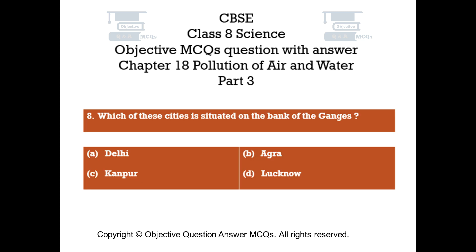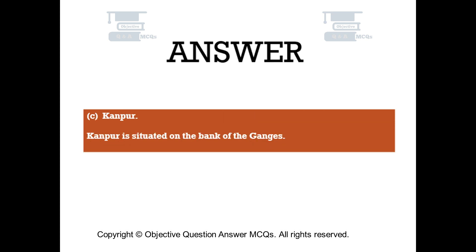Question number 8: Which of these cities is situated on the bank of the Ganges? Option A: Delhi, Option B: Agra, Option C: Kanpur, Option D: Lucknow. The right answer is Option C: Kanpur. Kanpur is situated on the bank of the Ganges.